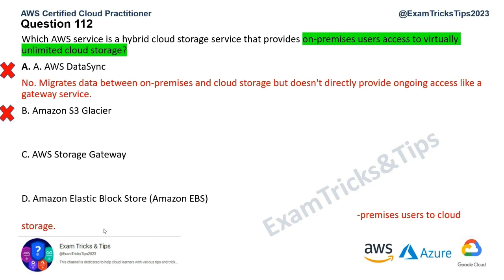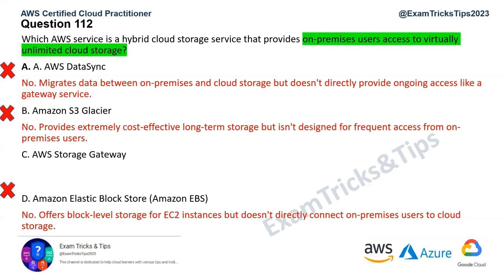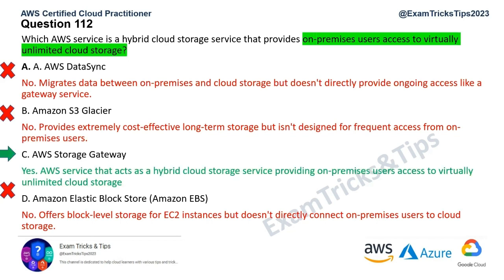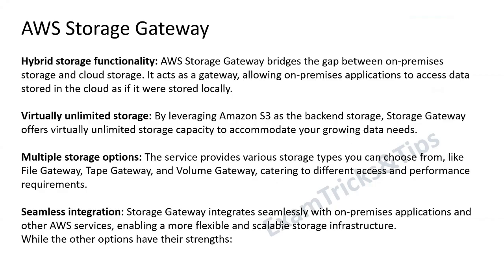That leaves us with Option C, AWS Storage Gateway — a hybrid cloud storage service that provides on-premise users access to virtually unlimited cloud storage. Key highlights: hybrid storage functionality, virtually unlimited storage using Amazon S3 as its backend, multiple storage options including File Gateway, Tape Gateway, and Volume Gateway, seamless integration between on-prem applications and AWS services, and scalable storage infrastructure.